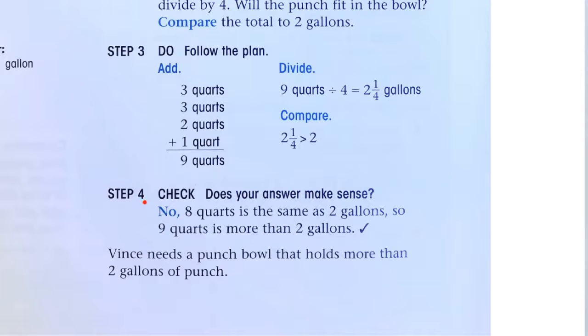Does your answer make sense? No. 8 quarts is the same as 2 gallons. So 9 quarts is more than 2 gallons. Vince needs a punch bowl that will hold more than 2 gallons of punch, or he needs to use less fluid.